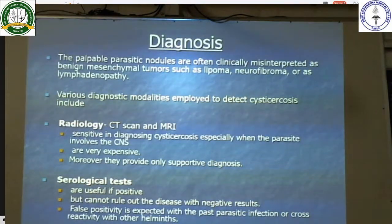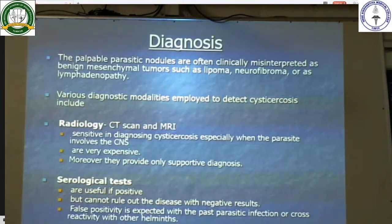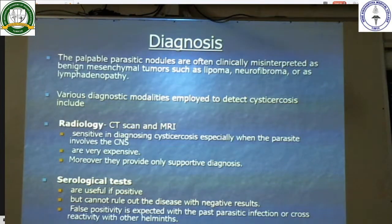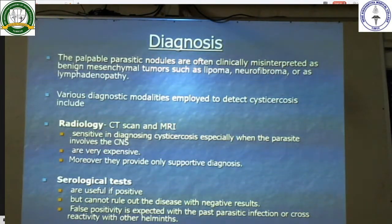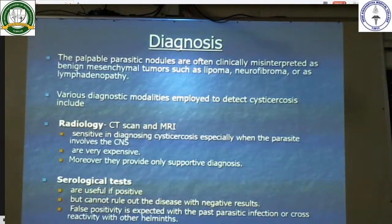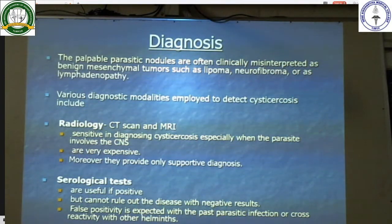The diagnosis: palpable parasitic nodules are often clinically misinterpreted as benign mesenchymal tumors such as lipoma, neurofibroma, or as lymphadenopathy. Diagnostic modalities include radiological methods — CT scan and MRI — which are sensitive in diagnosing cysticercosis especially when the parasite involves the CNS, but are very expensive. Serological tests are useful but cannot rule out the disease with negative tests; false positivity is expected with past parasitic infection or cross-reactivity with other helminths.